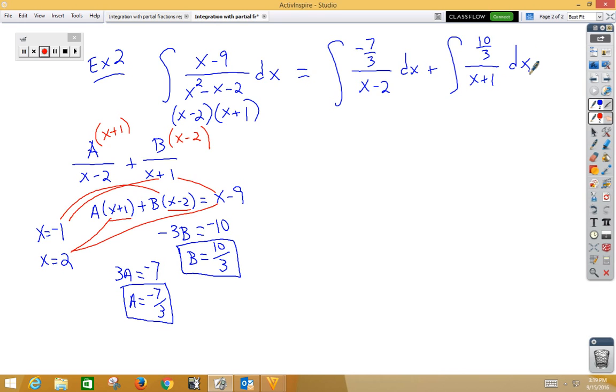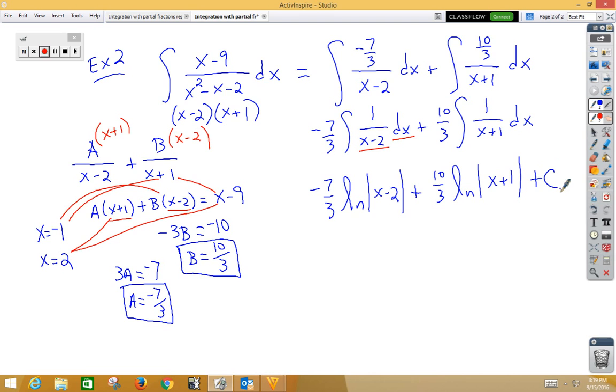Now, I don't really care about the fractions. I could put them out front, negative 7 thirds integral 1 over x minus 2 dx plus 10 thirds 1 over x plus 1 dx. Again, we're u subbing with natural logs here. u is x minus 2, du is dx, so we have negative 7 thirds natural log absolute value x minus 2 plus, same thing on this side, 10 thirds natural log absolute value x plus 1 plus C.